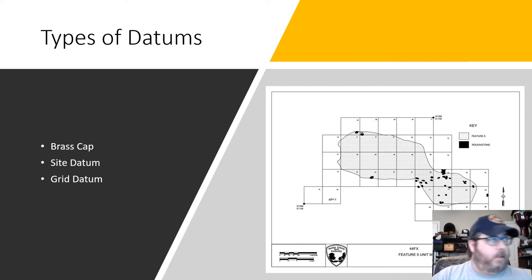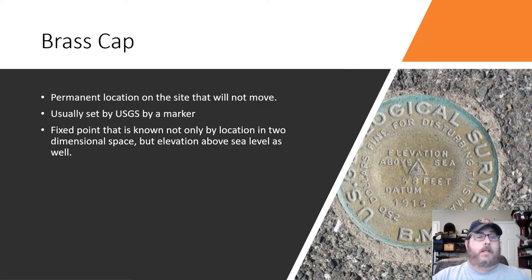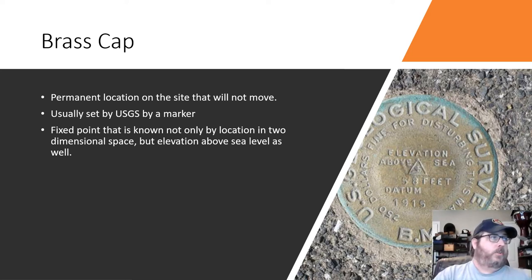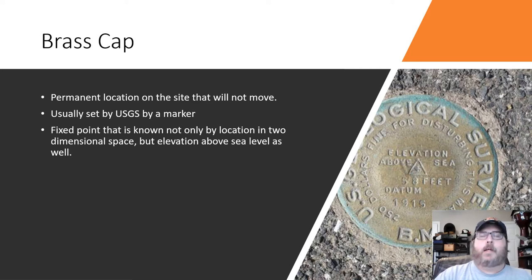There are three kinds of datum. If you look at the slide, we have the brass cap, the site datum, and the grid datum — and we'll go over all three. The brass cap is basically a permanent location on the site that will not move. Usually it's set by a USGS marker. It's a fixed point known not only by location in two-dimensional space but by elevation above sea level as well. When we say it's not going to move, this means someone picked this spot because it's a location like a big rock or a bridge — something in nature that is not going anywhere, and it's been there for probably 50 years.